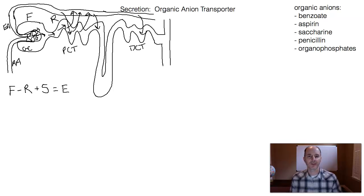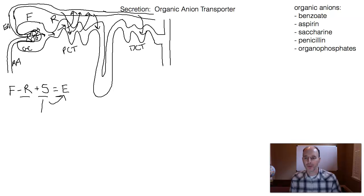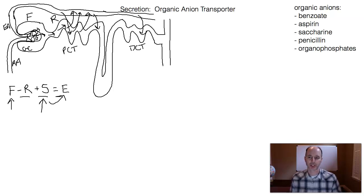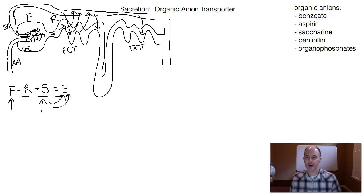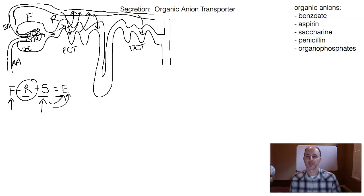What we filter minus what we reabsorb plus what we secrete determines what we excrete from the body. The more secretion you have, the more excretion you'll have. The more filtration you have can lead to more excretion. If you combine lots of filtration and lots of secretion, you're going to enhance your overall excretion from the body, as long as there's not too much reabsorption. Remember, reabsorption is putting it back into the body, so secretion can actually enhance the excretion of something.